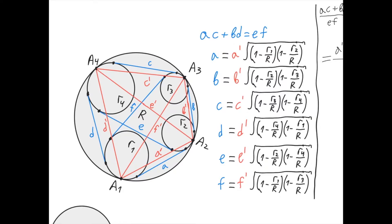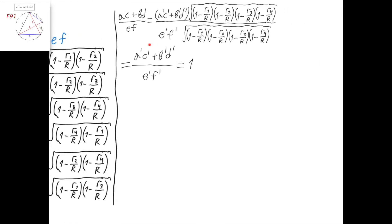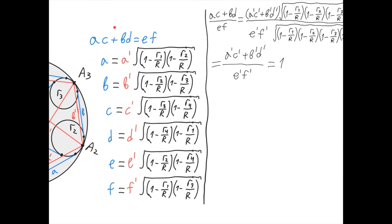Returning to the drawing, we see that A'C' plus B'D' equals E'F' by Ptolemy's theorem applied to the quadrilateral A1, A2, A3, A4, because this quadrilateral is cyclic. Therefore A'C' plus B'D' equals E'F', so this expression equals 1, from which it follows that AC plus BD equals EF, as desired.